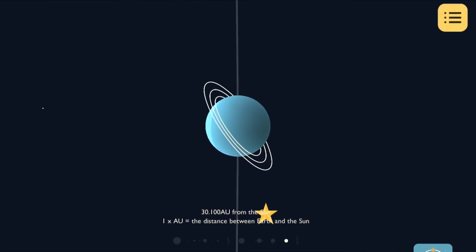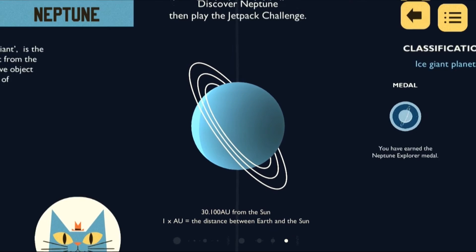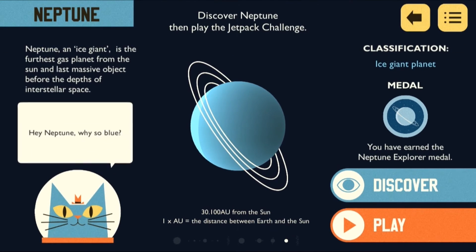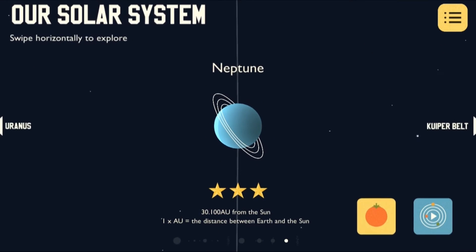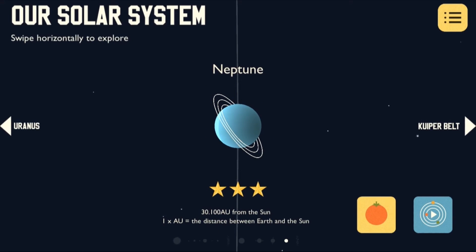When you tap on a planet you can find out more about it, learn lots of facts, and then try your hand at one of the jetpack challenges. When you're done simply hit the back arrow in the top right corner.